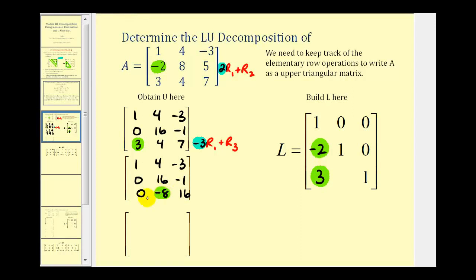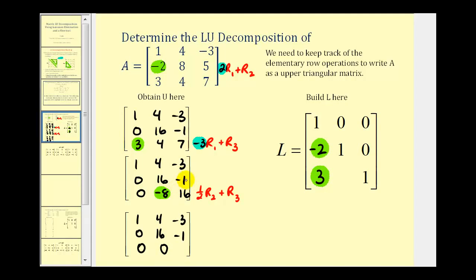Now let's obtain a zero in the row three, column two position. We need to add a multiple of row two to row three to obtain a zero there. Half of sixteen would be positive eight, so let's replace row three with one half times row two plus row three. Our multiplier is one half times another row that we add to obtain our zero. The first two rows stay the same. One half times zero plus zero is zero; one half times sixteen is eight, and eight plus negative eight is zero; one half times negative one is negative one half plus sixteen, that's fifteen and a half, or fifteen point five. Notice we now have an upper triangular matrix — we'll call this matrix U.